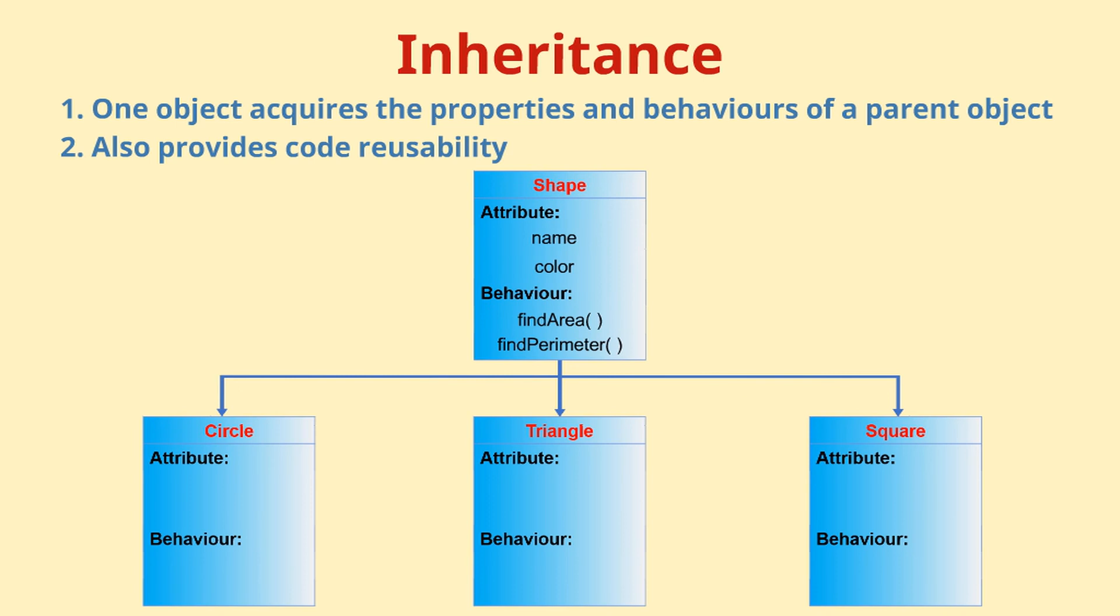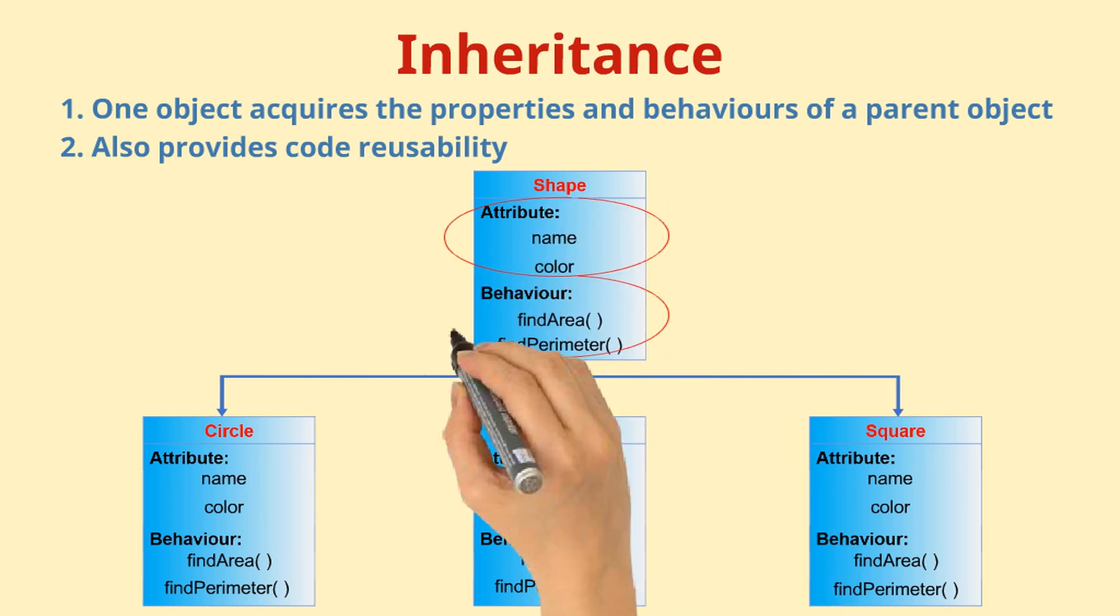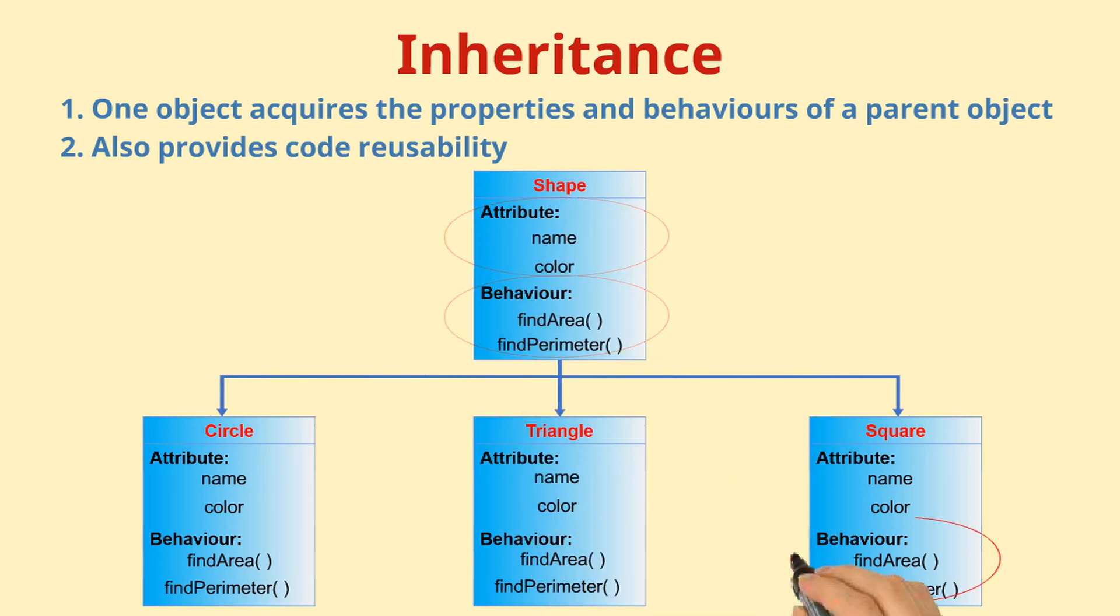The data and methods available to the parent class or superclass are also available in the child class with the same name. In this case, it will inherit all the features of the parent or superclass. So, you have methods like find area, find perimeter, which are available to the derived class.